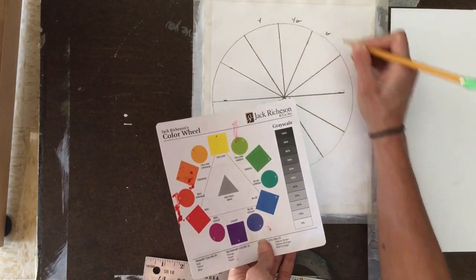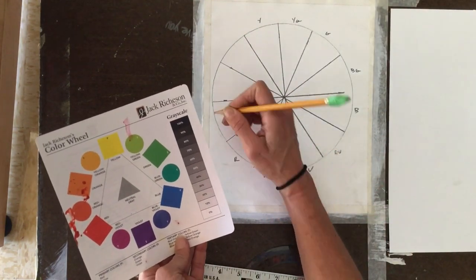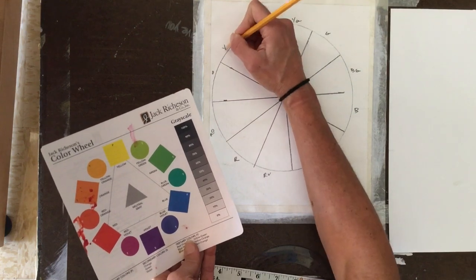I am then going to label each section. This helps so that you don't get confused or forget to include a color.